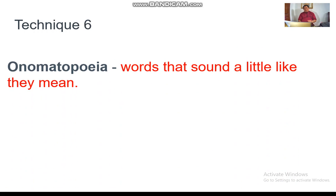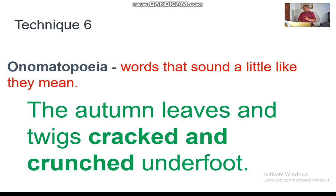Technique number six is onomatopoeia — words that sound like what they mean. For example, 'meow' is an onomatopoeic word because when a cat makes a sound, it sounds like 'meow.' Another example: 'The autumn leaves and the twigs crack and crunch underfoot.' When your feet step on dry leaves and twigs, you hear that crackling and crunching sound — crack, crunch.